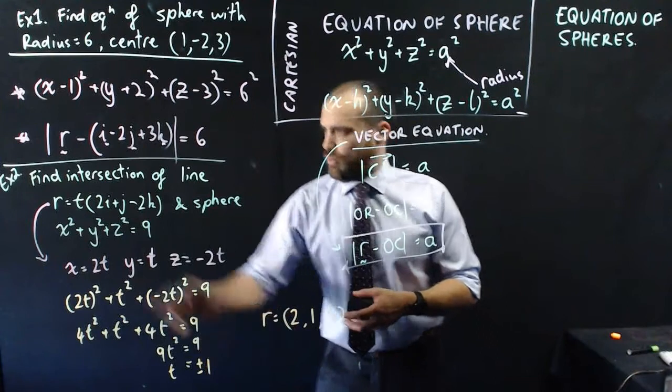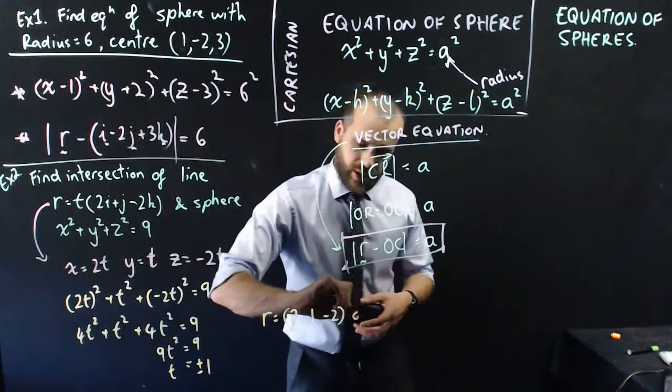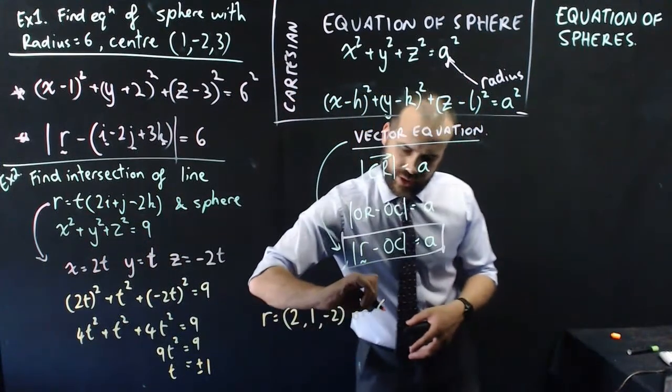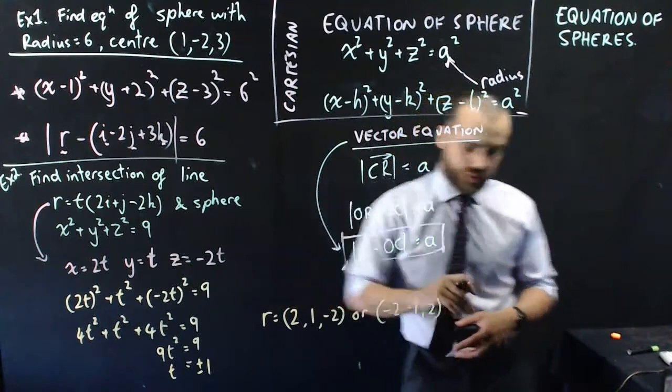If I do negative 1, if I put negative 1 there, I'm just going to get all of that in reverse. Negative 2, negative 1, and 2.